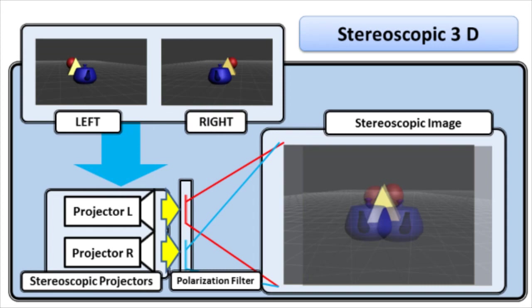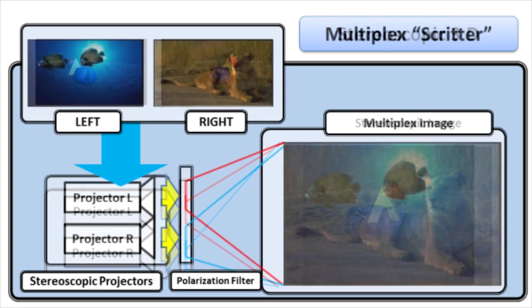A system for projecting multiple images on a single screen through multiplexing, called Skritter, has been developed by Utsugi and Associates.